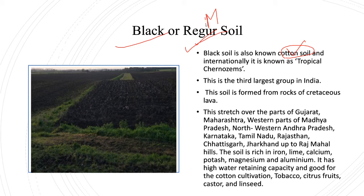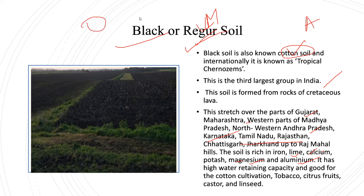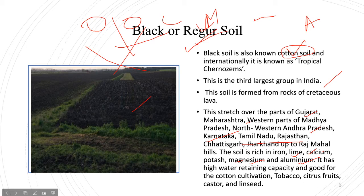Regur soil is commonly used in Maharashtra. Black soil is found in Gujarat, Maharashtra, Andhra Pradesh, Tamil Nadu, and some parts of Karnataka. It is very rich in iron, lime, calcium, potassium, magnesium, and aluminum. It has a high water-retaining capacity because it has fine particles that can retain water and minerals well. Black soil is best for cotton cultivation; also suitable for tobacco, citrus fruits, and castor.